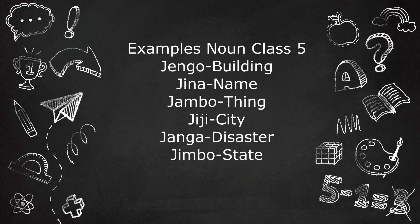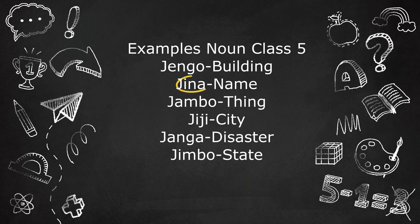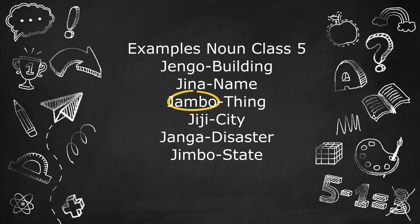Okay, let's just look at a few examples to help you understand what I'm talking about. Jengo - building. Jina - name. Jambo, as in Jambo Heli - thing. Jiji for city.